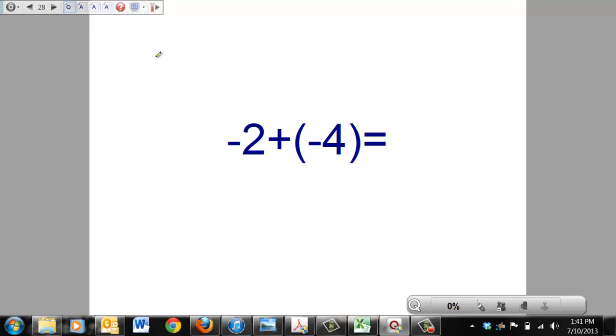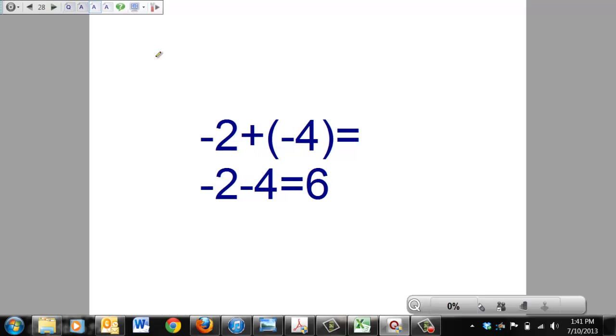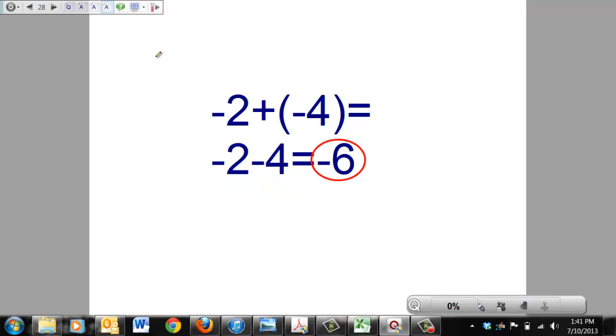Alright, this one, ugly problem situation. Multiply your signs, positive times negative is a negative. Now we have signs are the same, so we're going to find the sum. And then the sign in front of the larger number, that's 4, is going to go in front of your answer, so it's going to be a negative 6. Easy math.